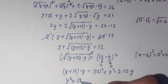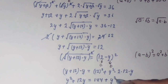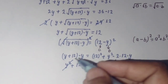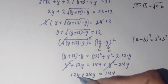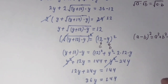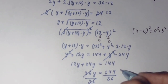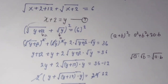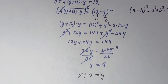Expanding: y² + 12y = 144 + y² - 24y. The y² terms cancel. We get 12y + 24y = 144, so 36y = 144. Dividing both sides by 36 gives y = 4.